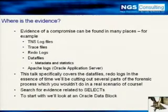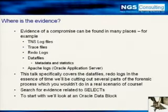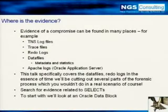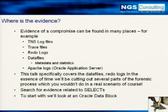So specifically with Oracle, where is the evidence going to be found? Pretty much where you'd expect. The log files are a good start, but beyond that there are the transaction files — what's known as the redo logs in Oracle — and the archived redo logs, which are essentially the backup version of the redo logs. The data files themselves provide a wealth of information with regards to compromises, including the metadata and statistics recorded in them. And obviously if there's an Oracle application server in front of the Oracle database server, the Apache web logs themselves will provide an enormous wealth of information.